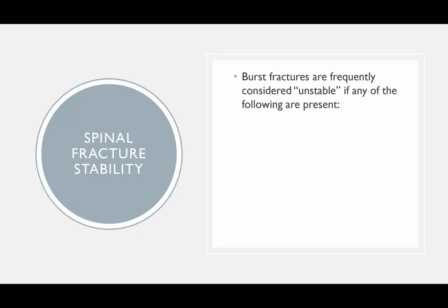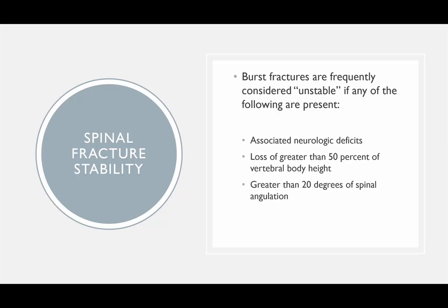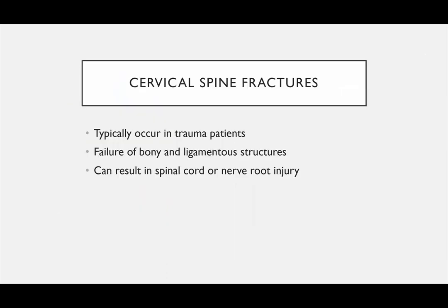When we talk about middle column injuries or burst fractures, we have to decide if it's stable or unstable. A burst fracture is considered unstable if any of the following are present: associated neurologic deficits, loss of greater than 50% of vertebral body height, greater than 20 degrees of spinal angulation, and compromise of more than 50% of the spinal canal — where you'll see fragments extruded into the spinal canal pressing on the nerve roots.